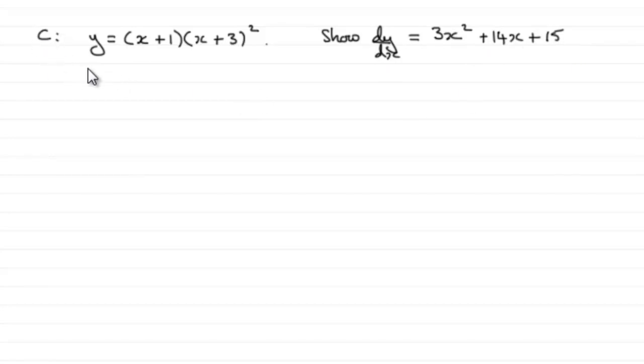And this was our curve C defined as y equals x plus 1, all multiplied by x plus 3, all squared. So how do we show that dy dx equals this then? Well, first of all, what we're going to need to do is expand this.